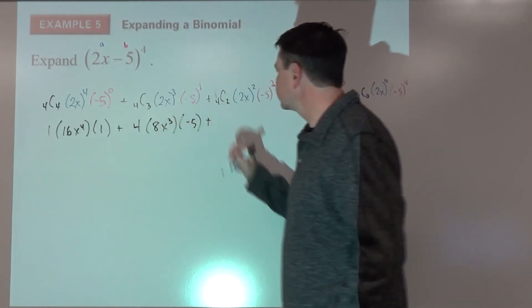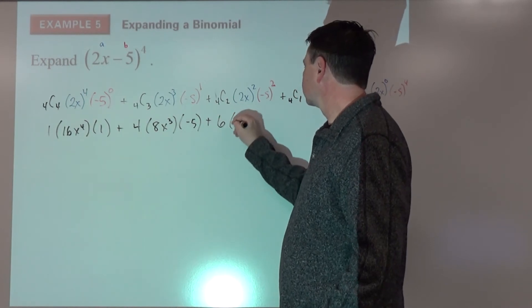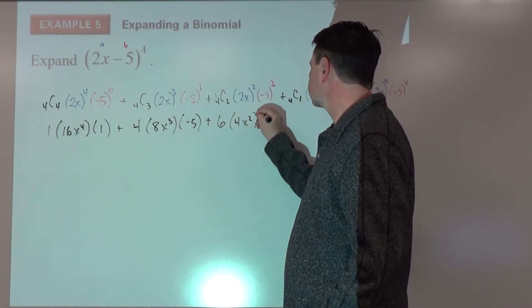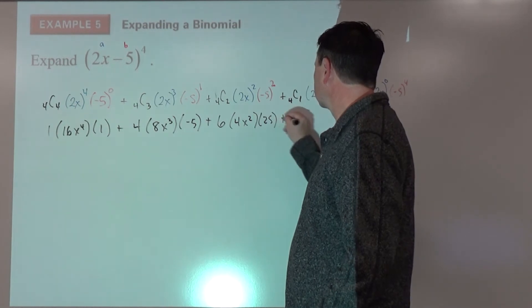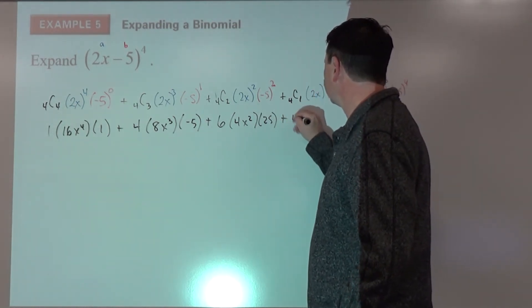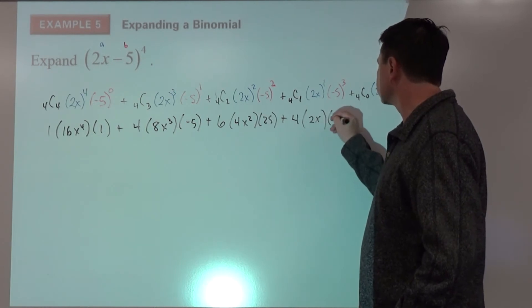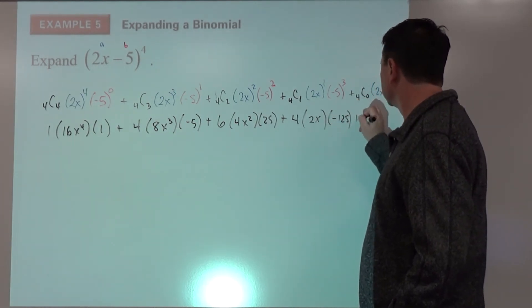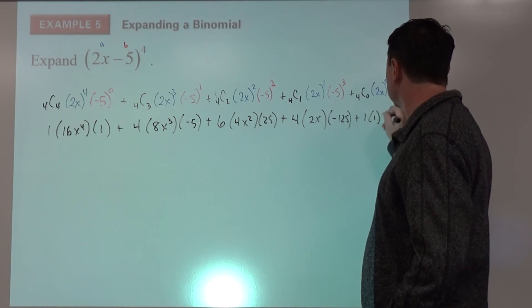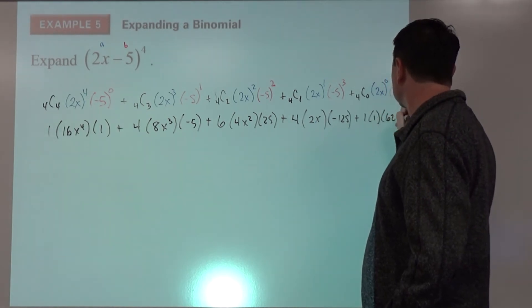Plus 6 times 4x squared times 25, plus 4 times 2x times negative 125, plus 1 times 1 times 625.